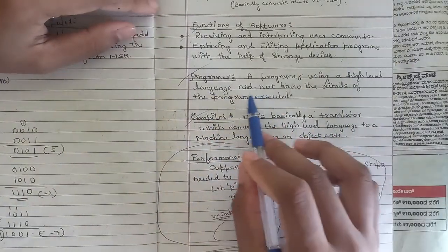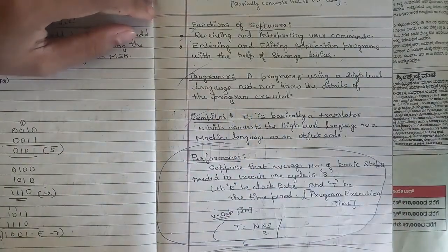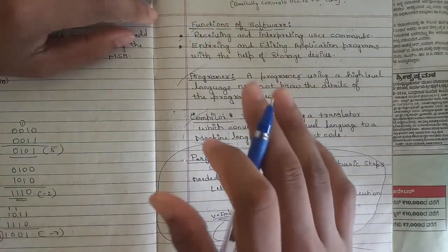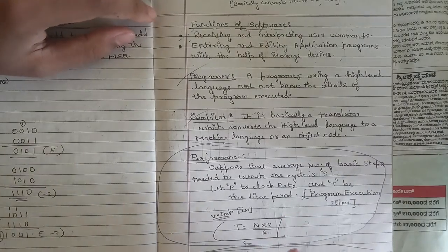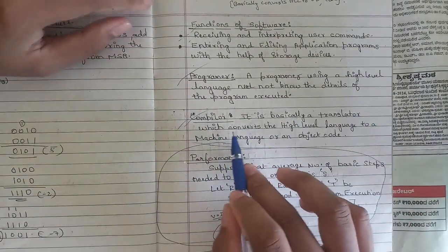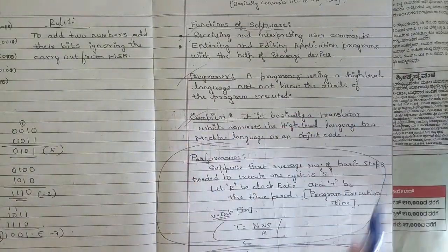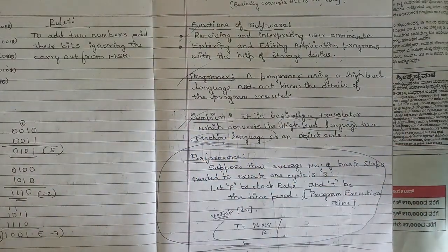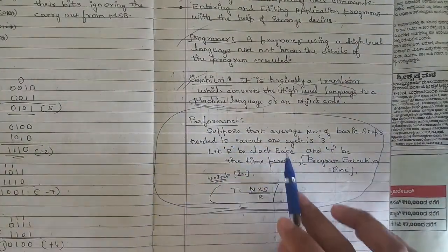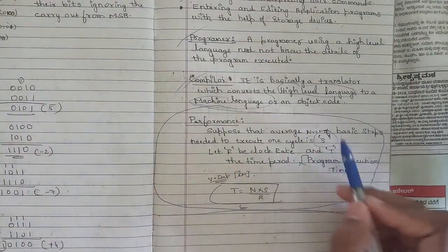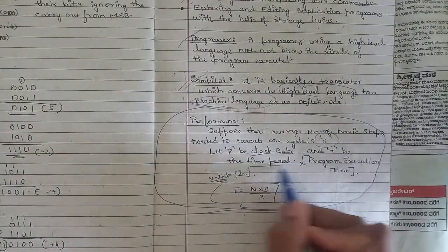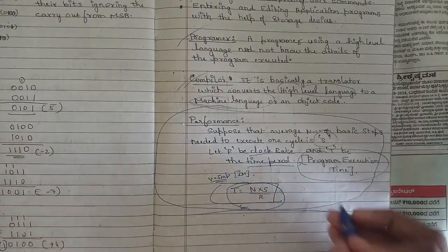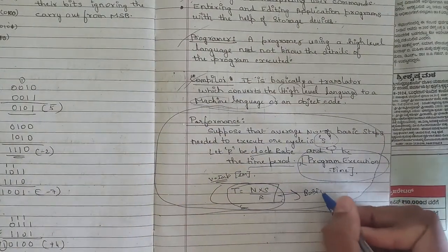A programmer using a high-level language need not know the details of how the program is executed. A compiler is a translator which converts a high-level language to machine-level language, also called object code. For the basic performance equation: let S be the average number of steps needed to execute one cycle, R be the clock rate, and T be the program execution time. The basic performance equation is: T = N × S / R.